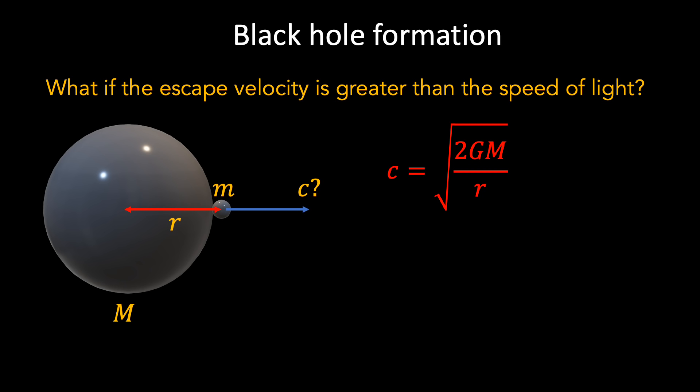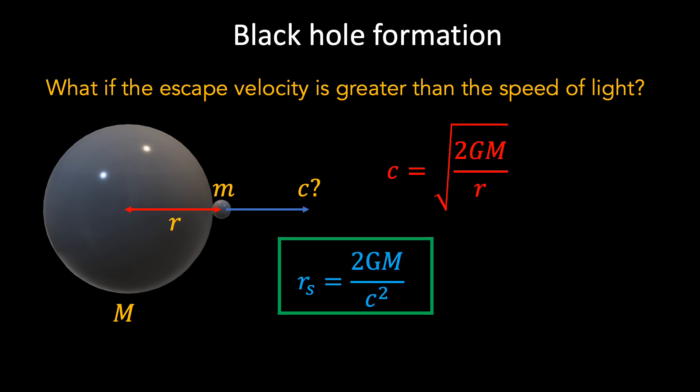We can see the condition necessary for a black hole to form by looking at the escape velocity equation and replacing the escape velocity with the speed of light. If we then rearrange for r, we find that r equals 2GM over c squared. This radius is known as the Schwarzschild radius, and it tells us how small we would have to squeeze an object of mass M in order for it to collapse to form a black hole. As we squeeze the two electrons closer and closer together, the mass of our system increases due to the uncertainty principle and Einstein's theory of special relativity.